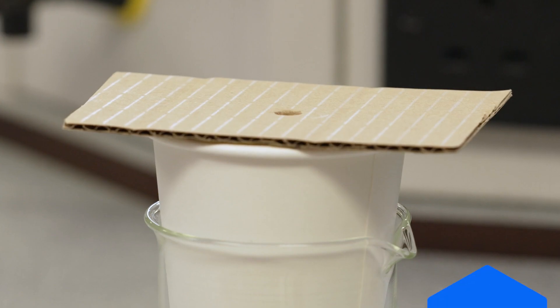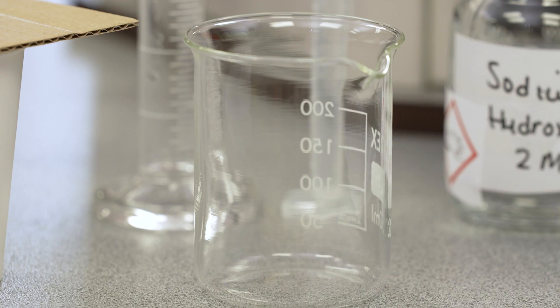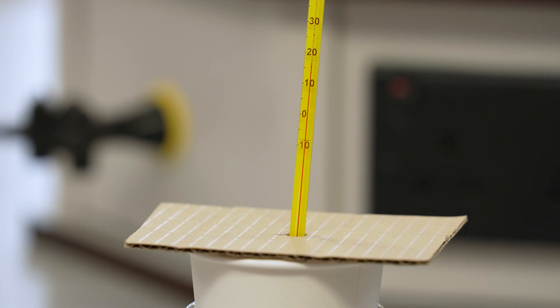Place the lid on top of the cup. The lid should have a hole in it to accommodate the thermometer. The measuring cylinder should be thoroughly rinsed. Using the thermometer, measure the starting temperature of the acid and record this in a suitable table.